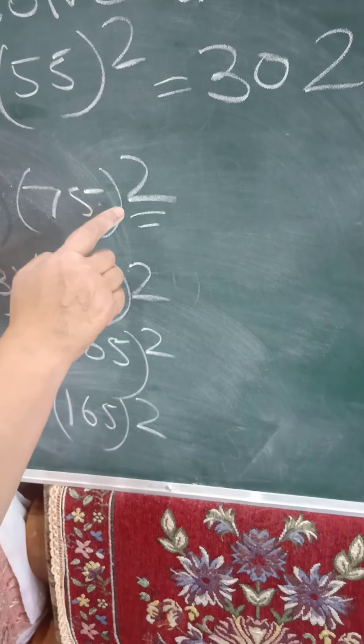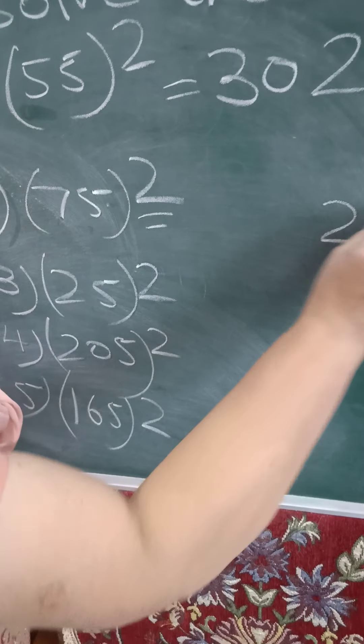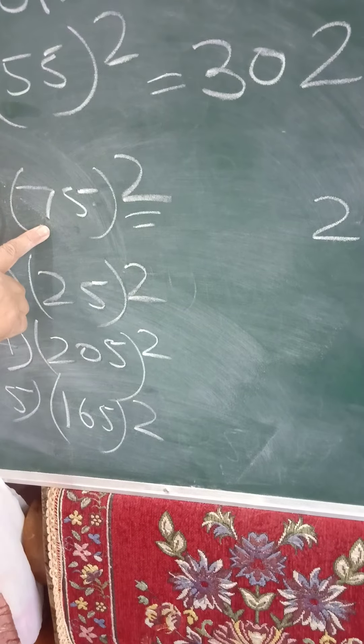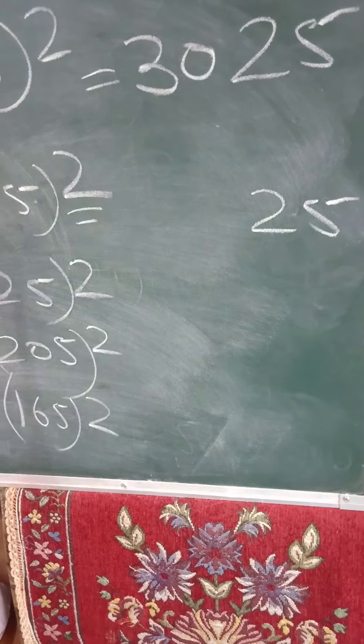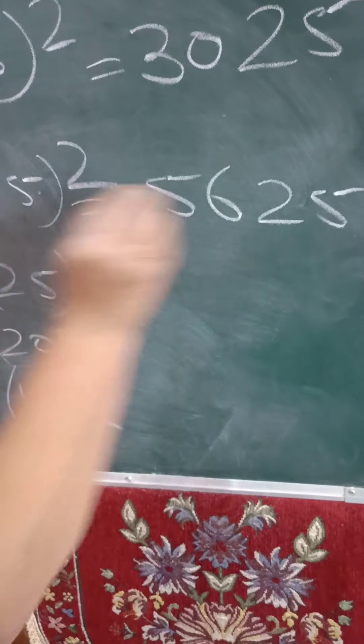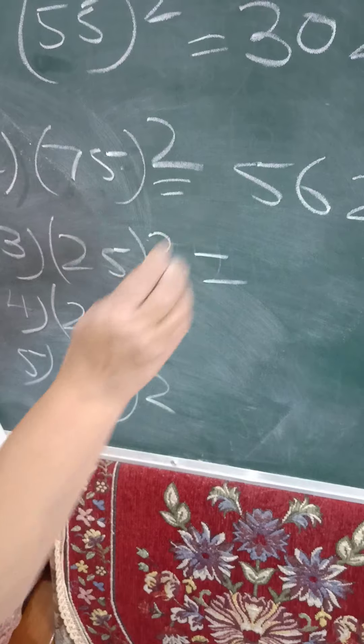Again 5, 5 are 25. 7. The next digit is 8. 7, 8 are 56.